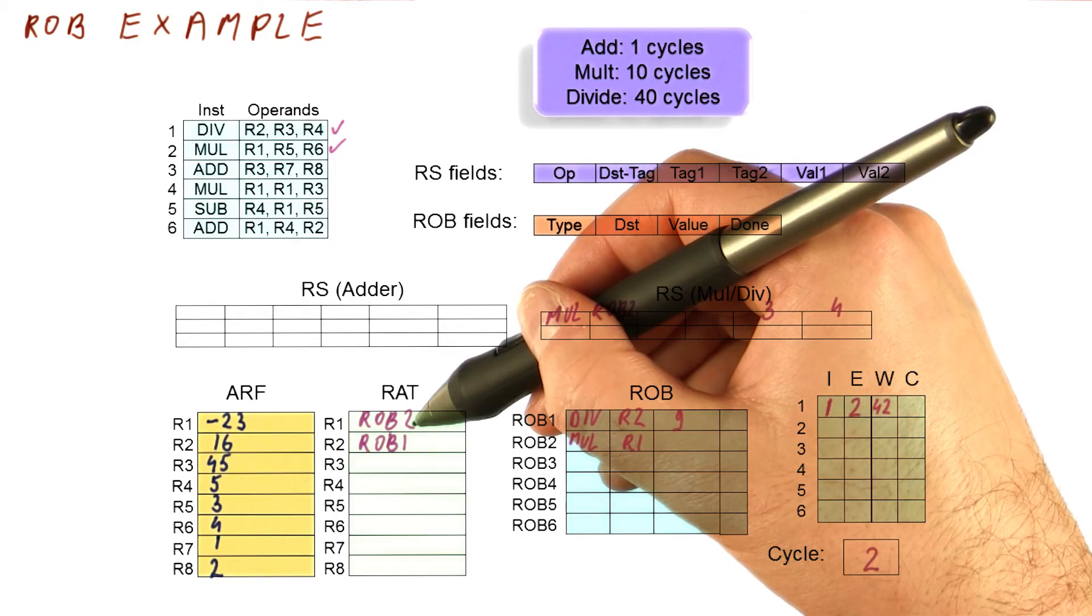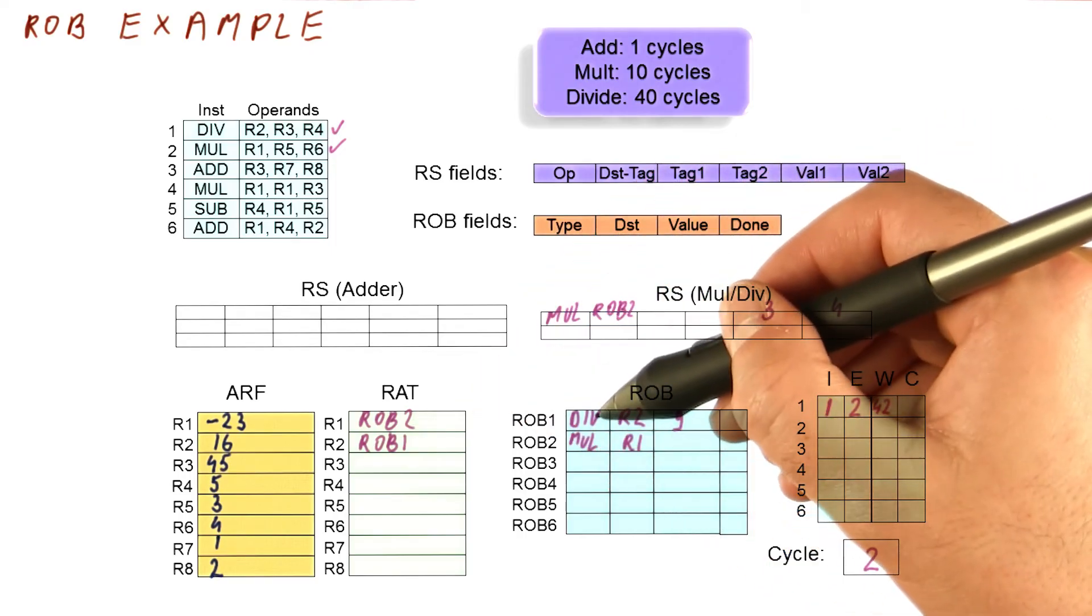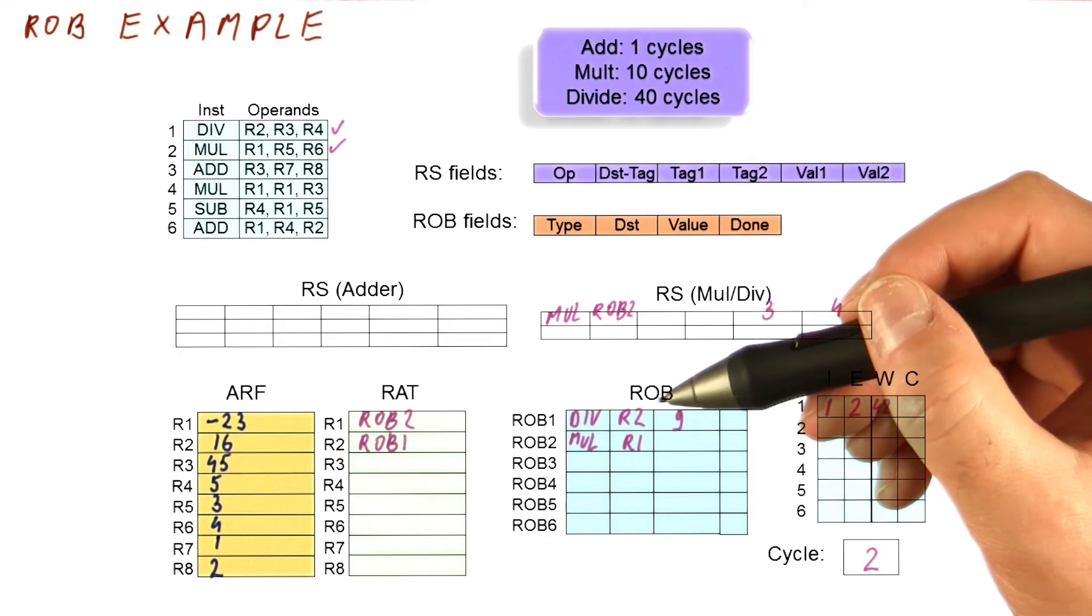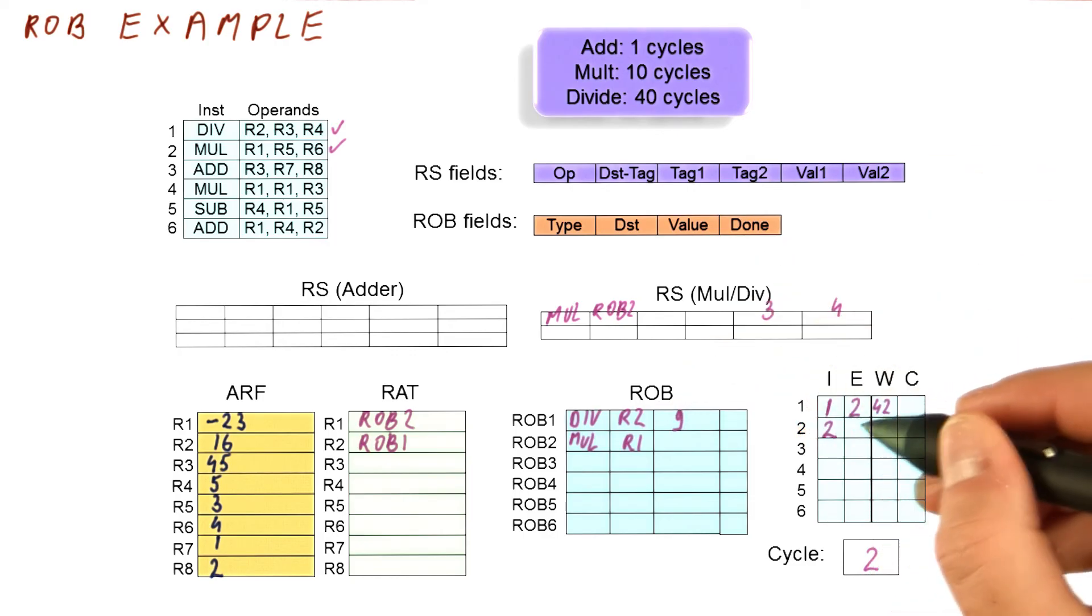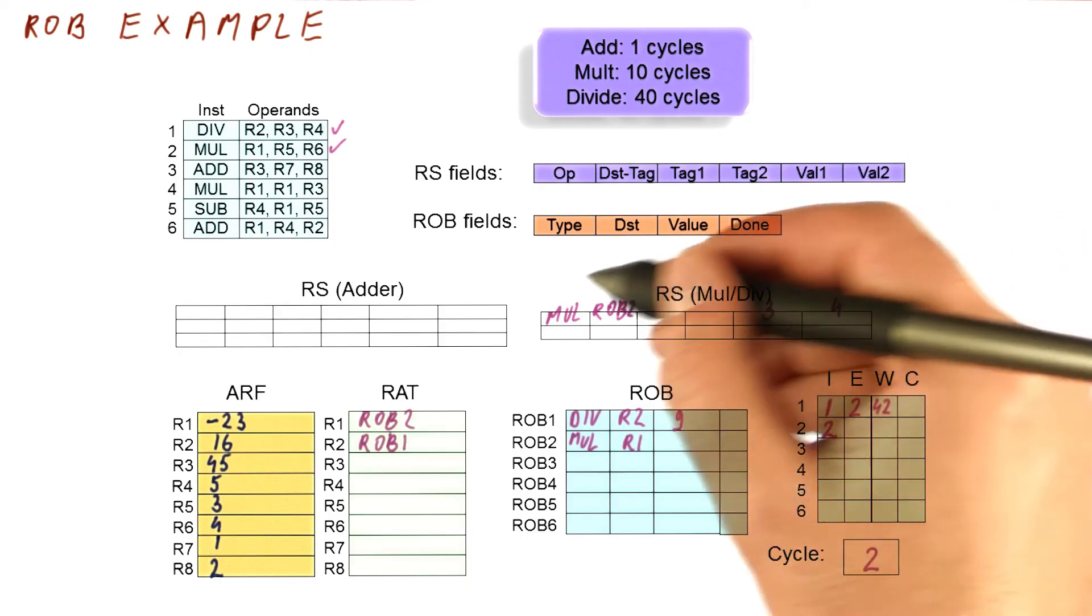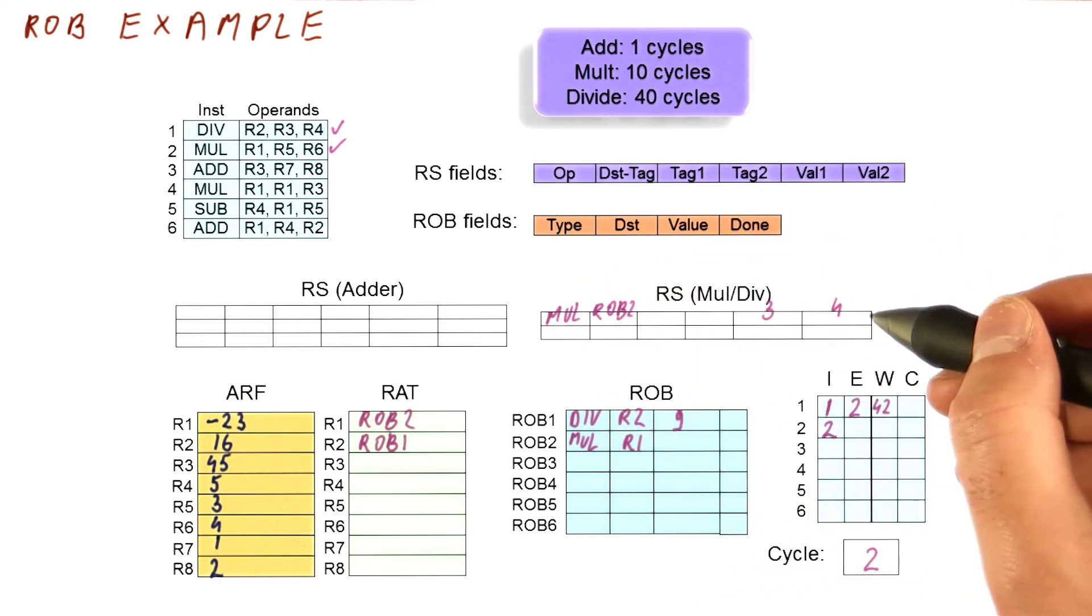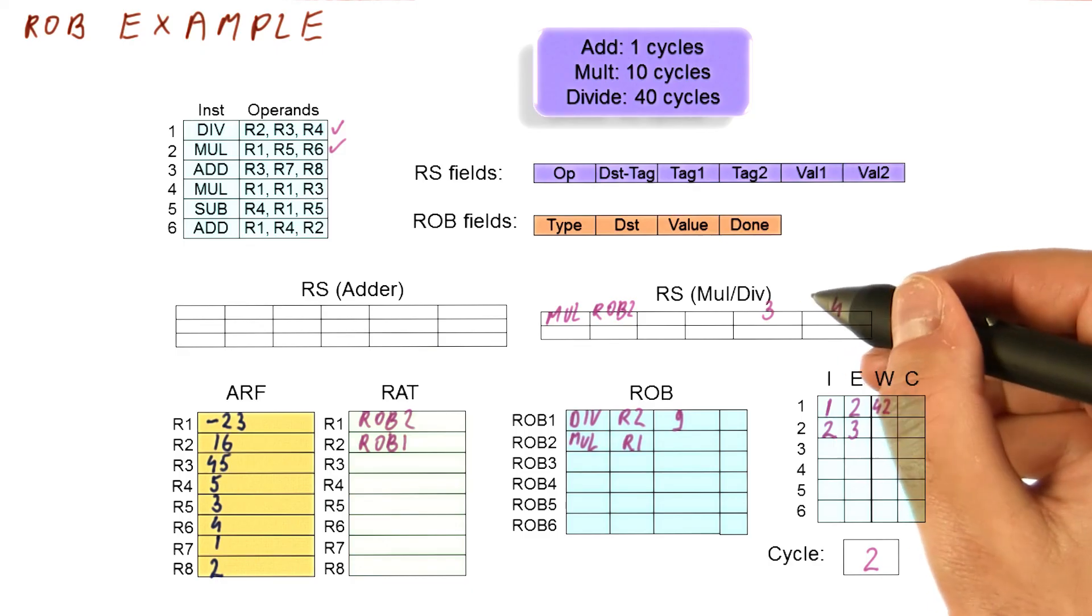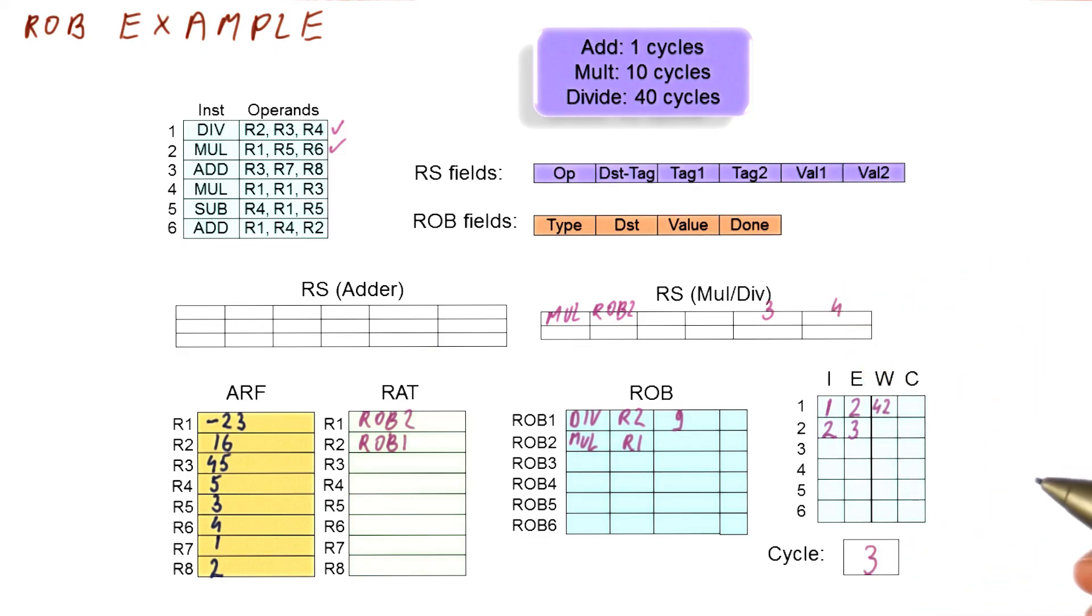Now we need to remember that R1 from now on is mapped to ROB2. Basically, if anybody from now on wants to use R1, it really needs to wait for the result of instruction in ROB2. So this instruction has issued in cycle two. It's going to dispatch also in cycle two because it's ready to go. So in cycle three, it's going to begin executing. And with that, we have moved to cycle three.